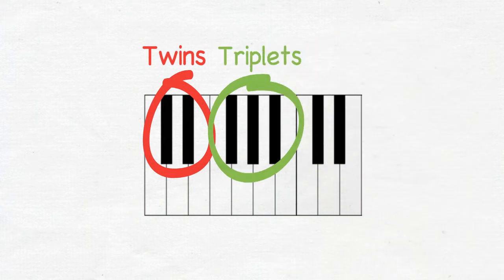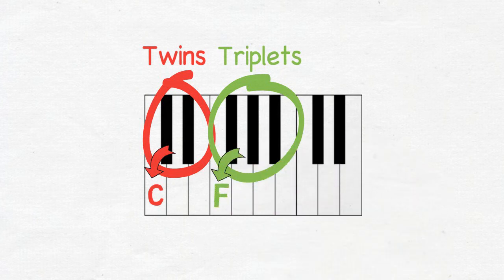Once you've found these, you can find your first two notes, C and F. The C will always be the white note before the twins and the F will always be the white note before the triplets.